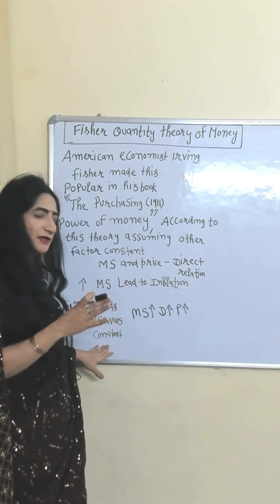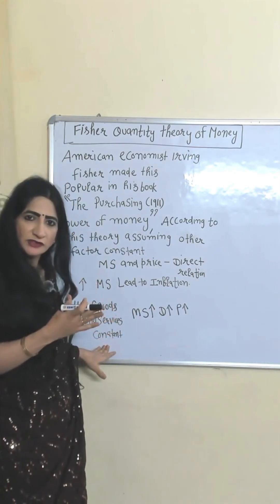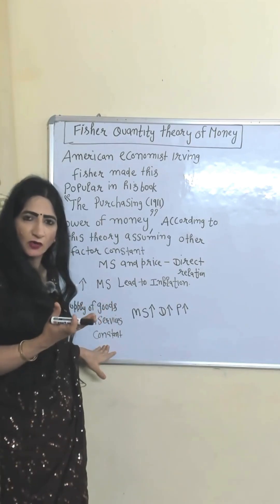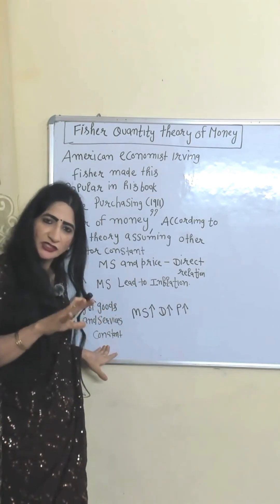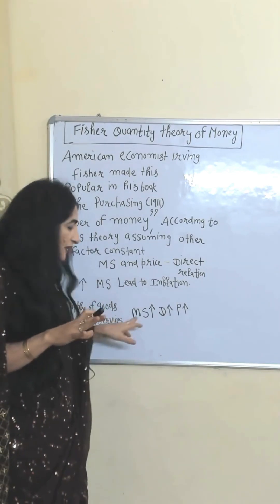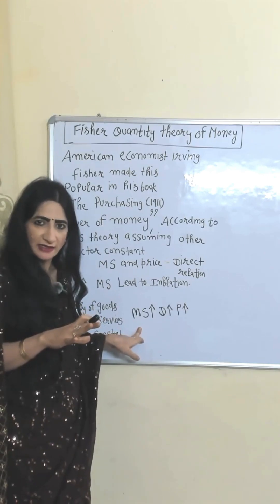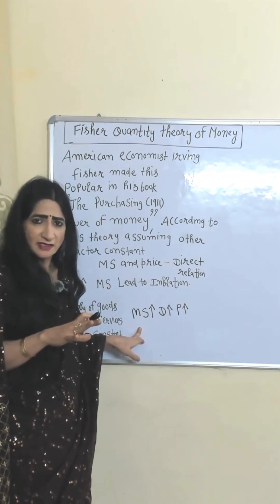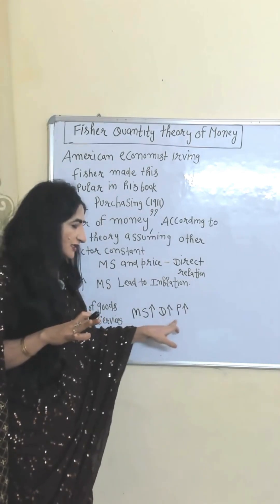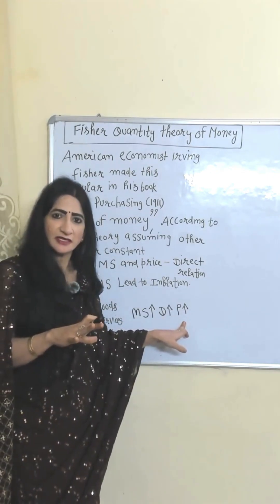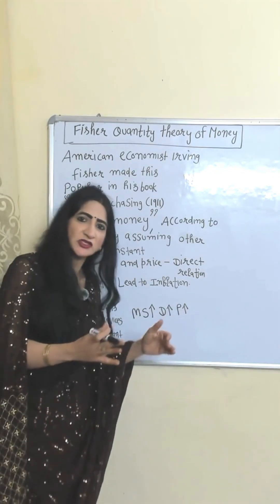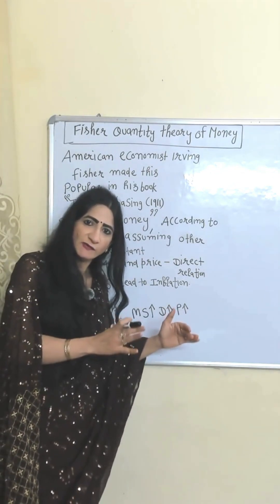For example, if the supply of goods and services is constant — our production is constant — and only money supply increases, as a result demand increases and price increases. Eventually, it will lead to inflation.